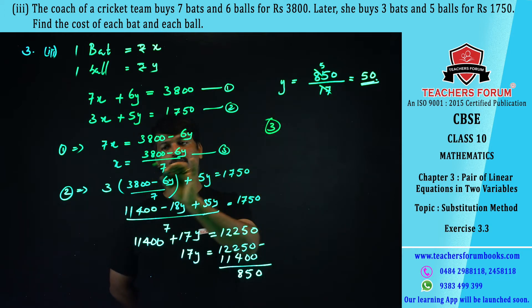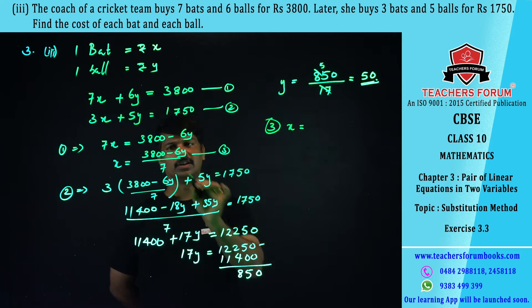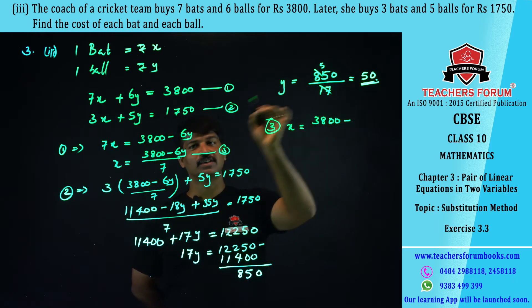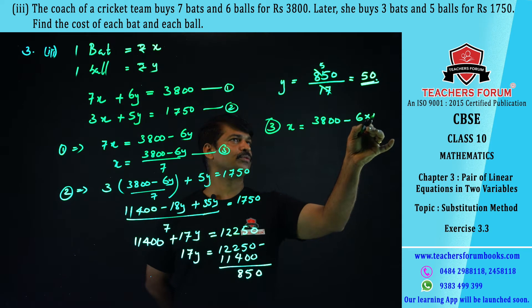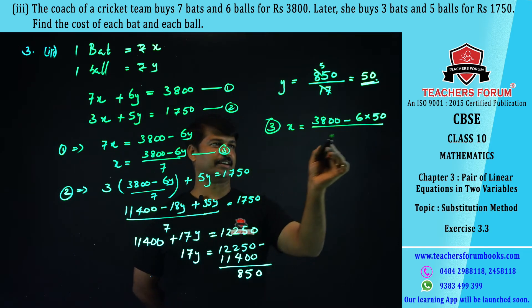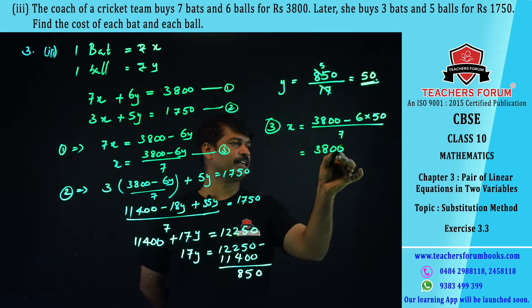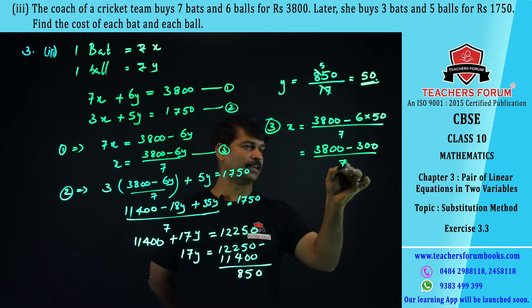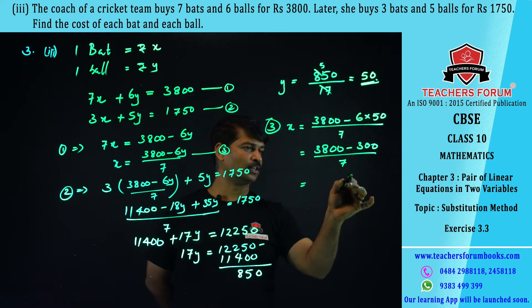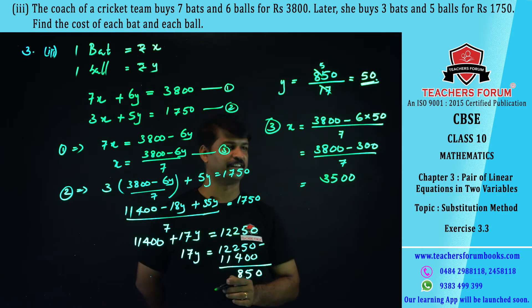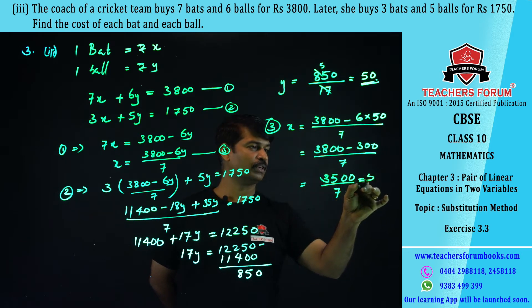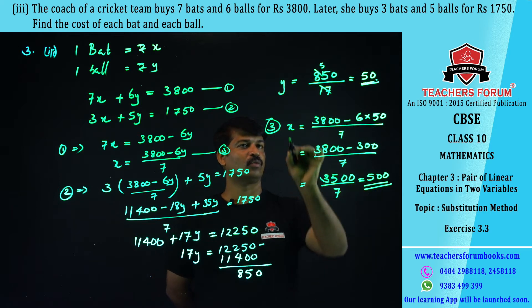x = (3800 − 6y) / 7. Since y = 50, we get 6y = 6 × 50 = 300. So x = (3800 − 300) / 7 = 3500 / 7. Dividing 3500 by 7 gives 500. So x = 500.